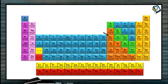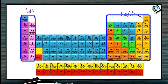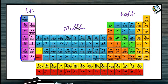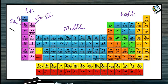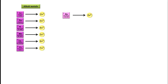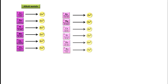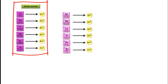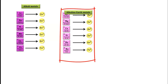Looking at the periodic table, the left portion contains Group 1 and Group 2 elements. Group 1 has the configuration ns1 — lithium 2s1, sodium 3s1, potassium 4s1 — and Group 2 has ns2 — beryllium 2s2, magnesium 3s2, and so on. All Group 1 elements are alkali metals and all Group 2 elements are alkaline earth metals.